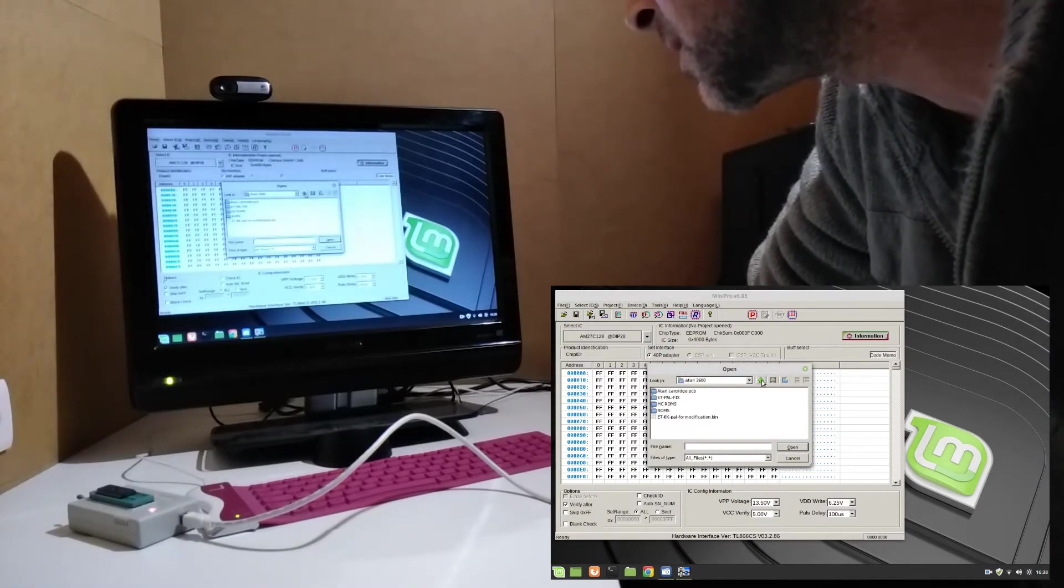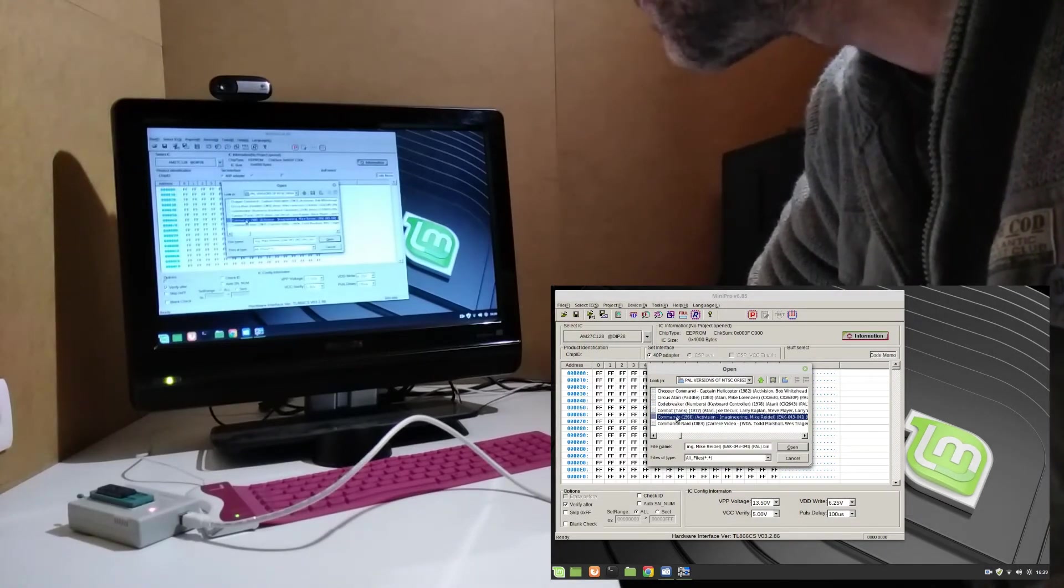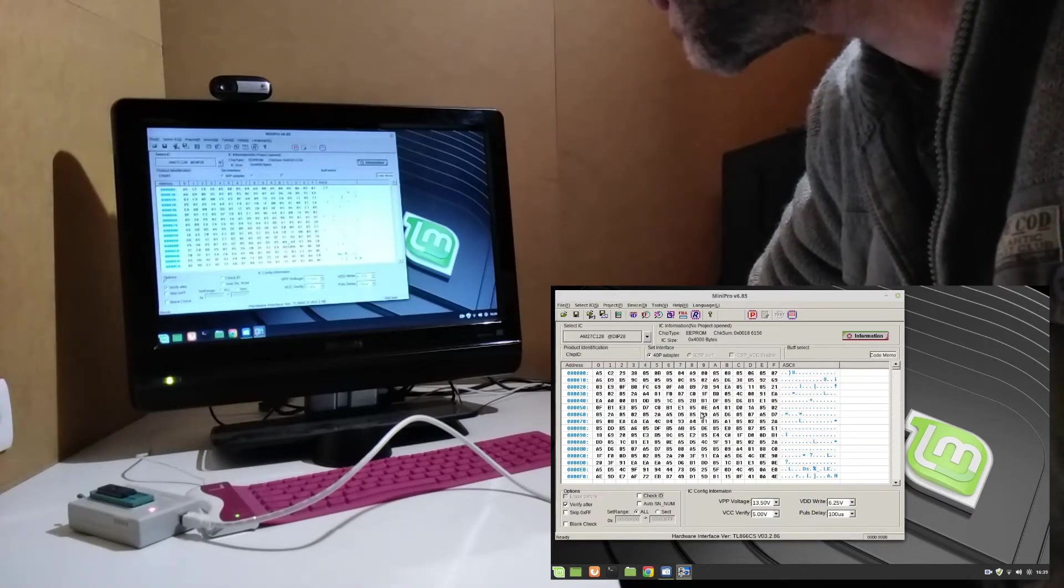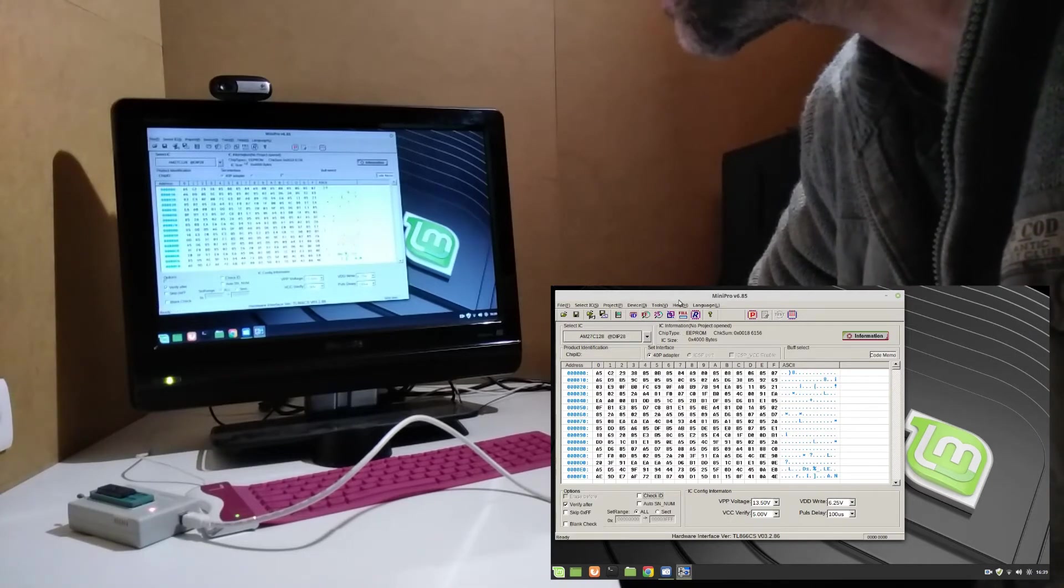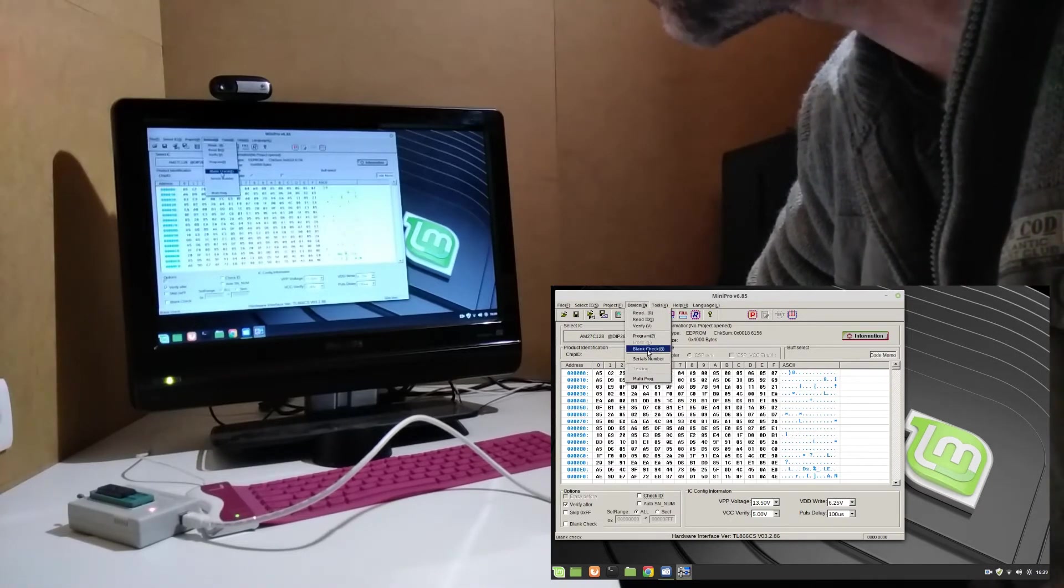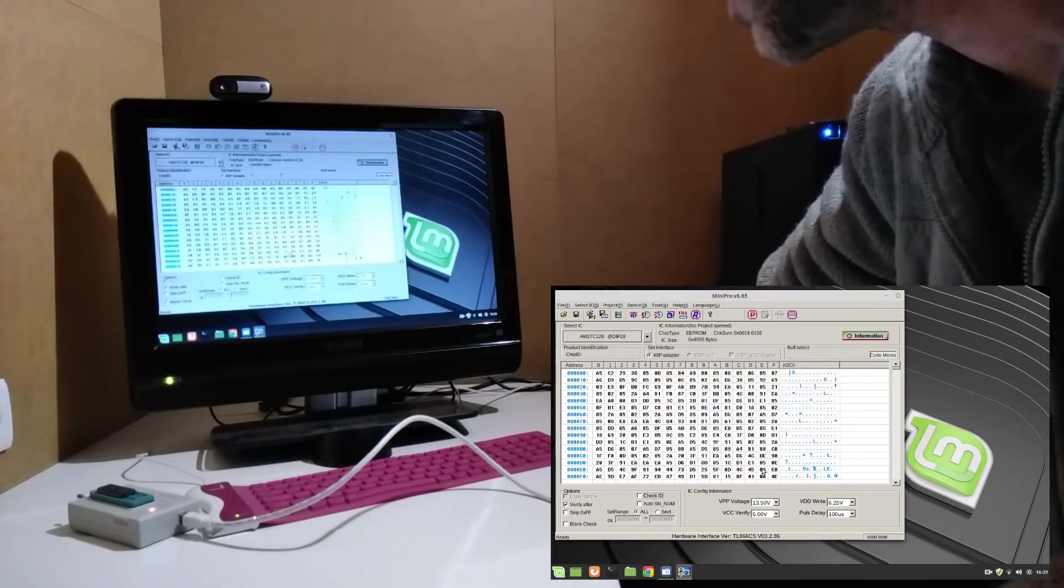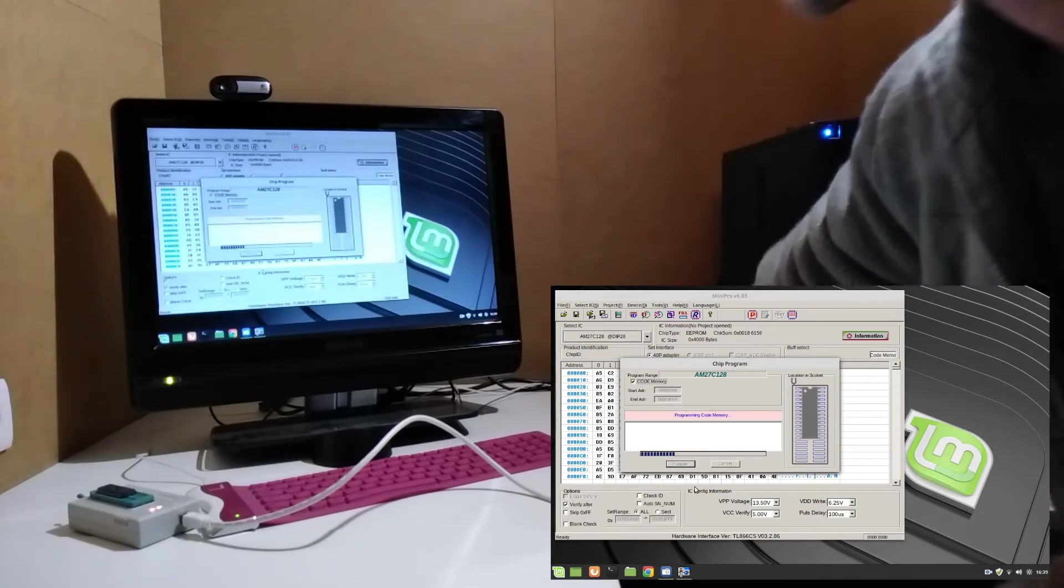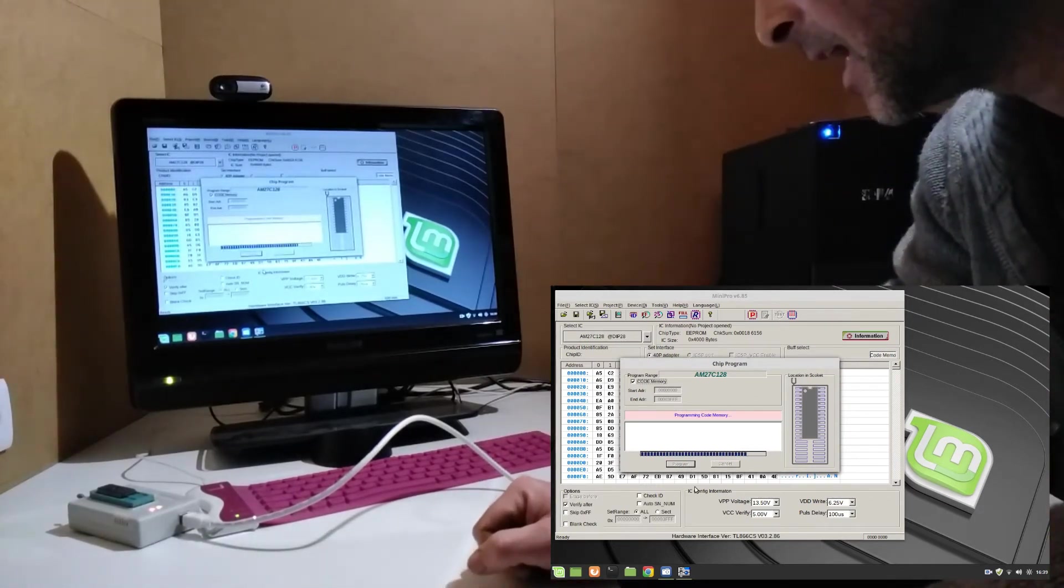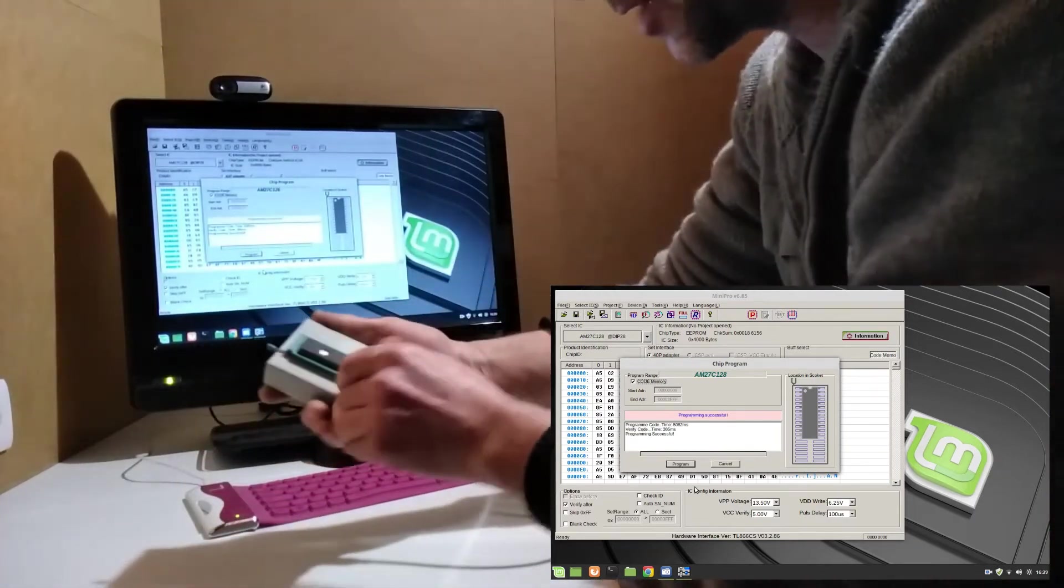Now all I want to do is file and open my Atari ROM. We'll go Commando, here we are. We will load that into the buffer. I will just check that the EEPROM I had is blank - device blank check - and the device is blank. Now I will program it, so I just click on program here. It'll program, it'll verify, and everything should be good. There we go, programming successful.